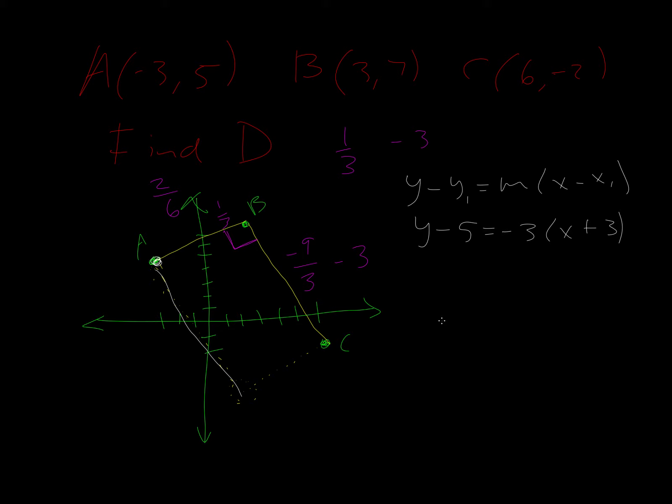Okay, because of what we're going to do next, I'm going to put this in slope intercept form. Okay, so I'm going to distribute. So we get negative three X minus nine. Add five to both sides. So Y equals negative three X minus four. Okay, so we're going to use that later. That represents that white line.